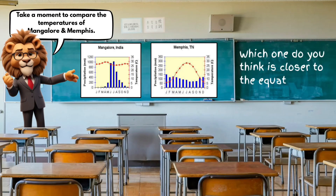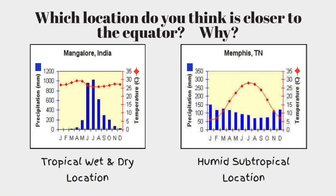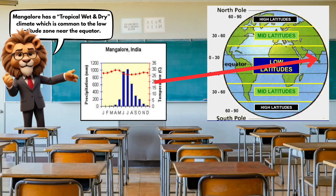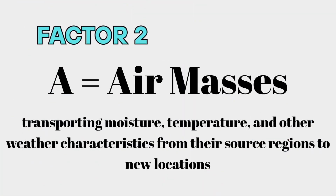Now let's take a moment to compare the temperatures of Mangalore and Memphis. Which location do you think is closer to the equator and why? Mangalore has a tropical wet and dry climate, which is common to the low latitude zone near the equator, whereas Memphis has a humid subtropical climate, which is common to the temperate climates found in the middle latitudes.